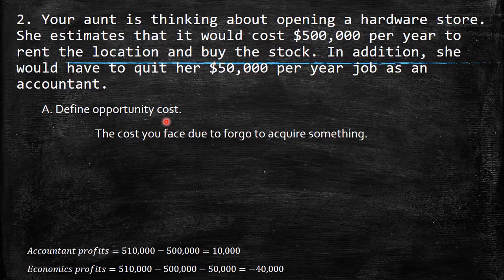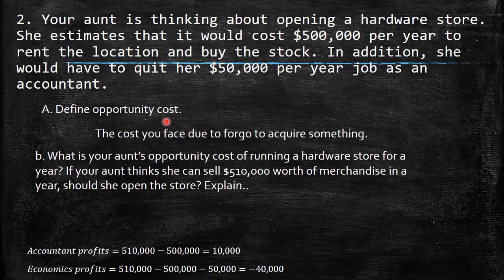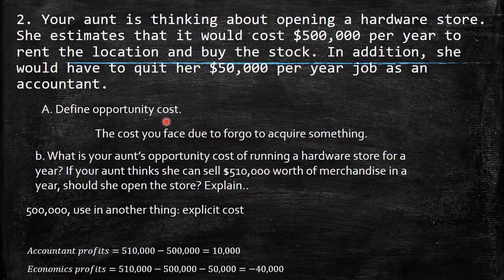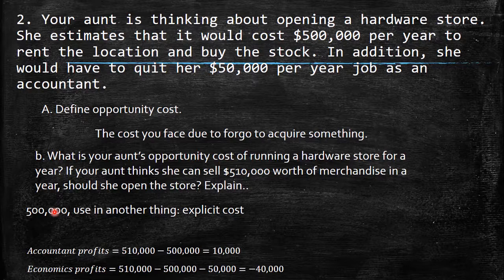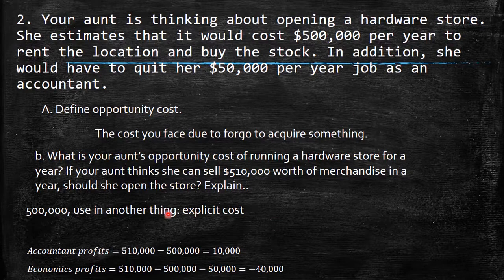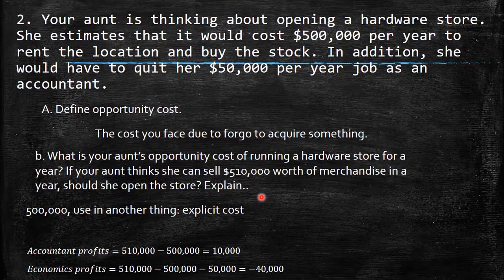What is your aunt's opportunity cost of running the hardware store for a year? We have $500,000 per year for renting — a fixed cost. This is an explicit cost because she has to actually outlay that money. She could use it for something else, like traveling.